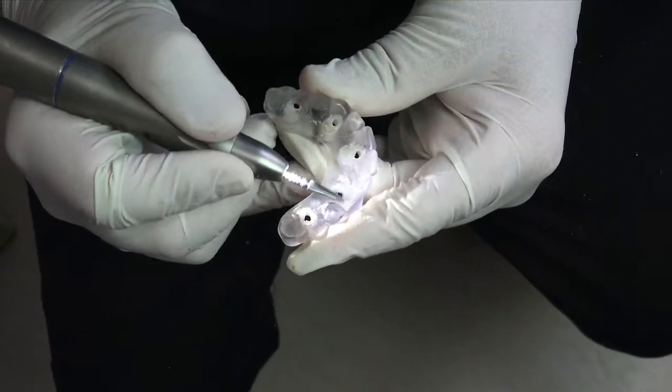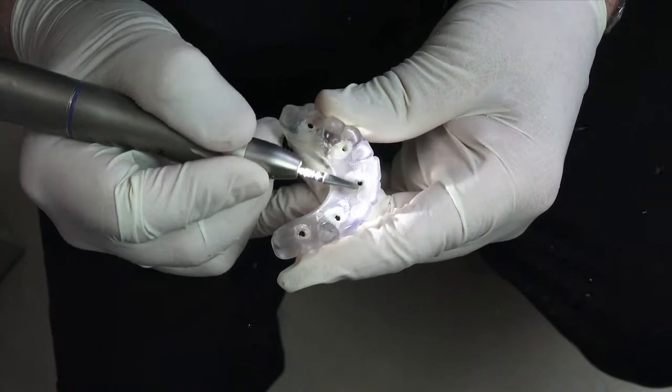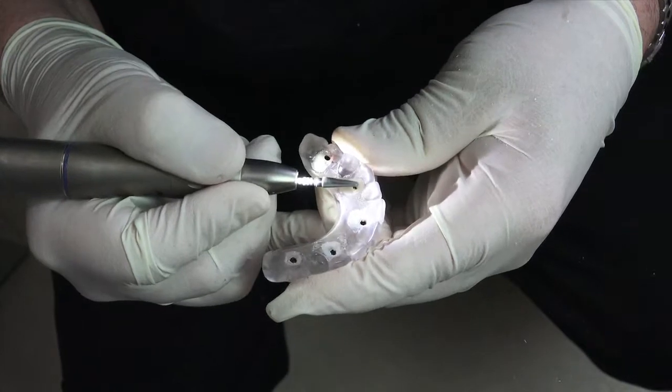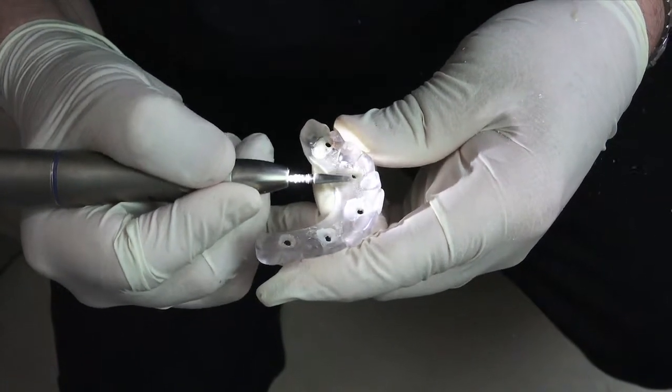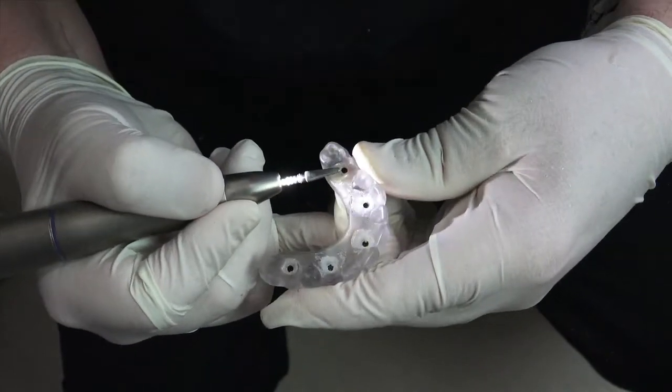Some clinicians will also reduce about one to two millimeters of the tissue side of the clear duplicate bridge. This will ensure space for the light body impression material at the first restorative appointment for the final impression. This may also be done at the first restorative appointment.